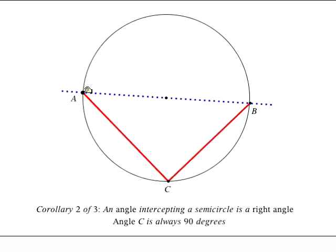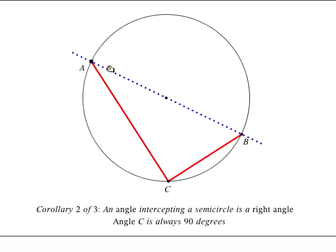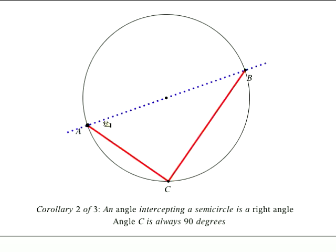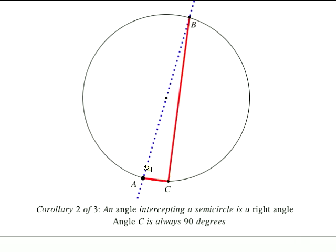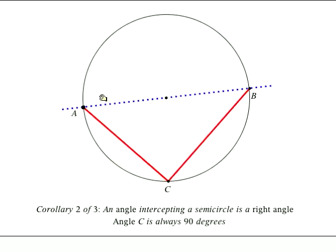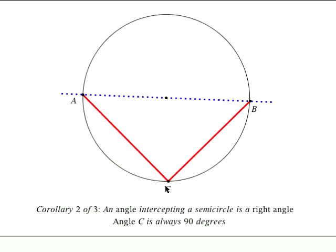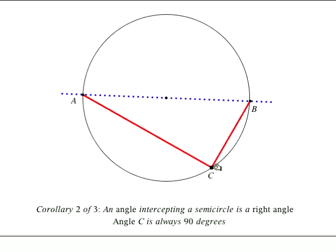So let's see what happens. Angle C is always 90 degrees, no matter how we make it. 90 degrees at all times, and that goes for if we move C around too.